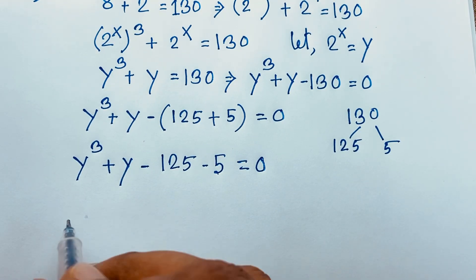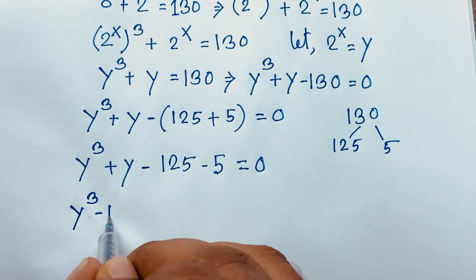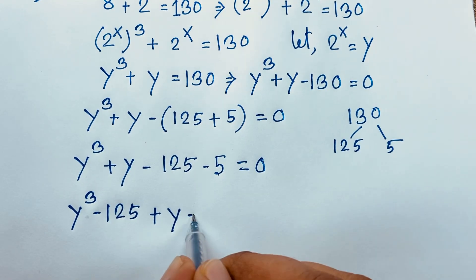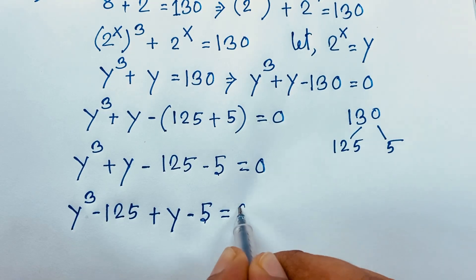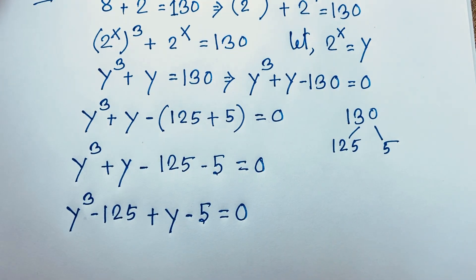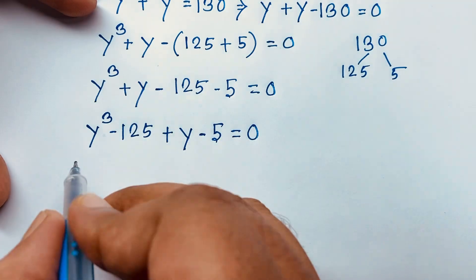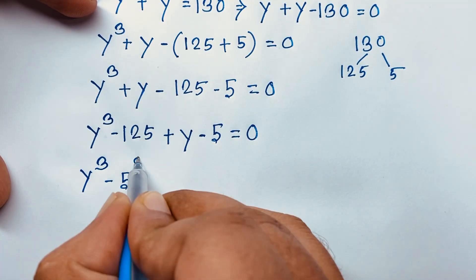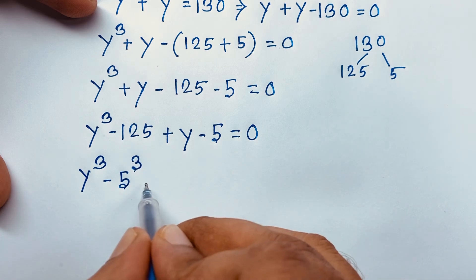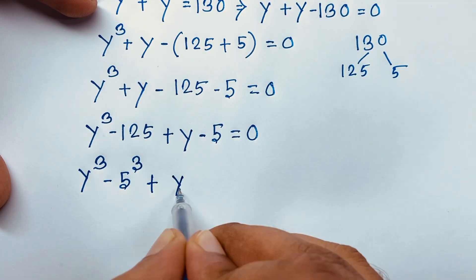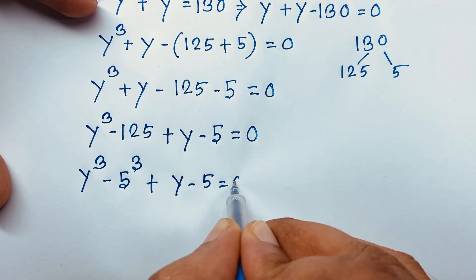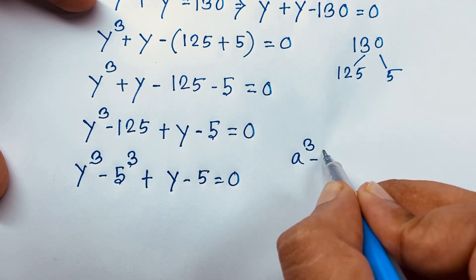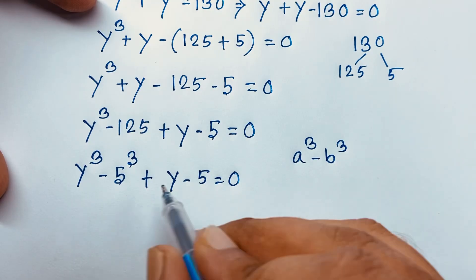So we rearrange: y to the power 3 minus 125 plus y minus 5 is equal to 0. Solving step by step, this gives us y to the power 3 minus 5 to the power 3, plus y minus 5 is equal to 0. This is now in the form a cubed minus b cubed.